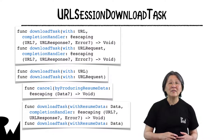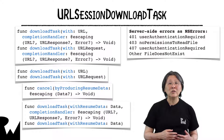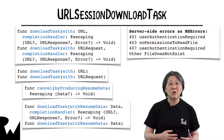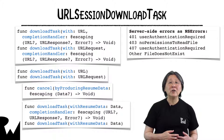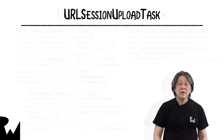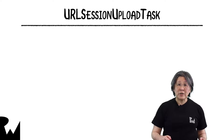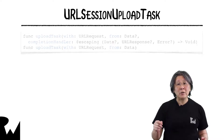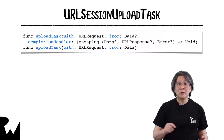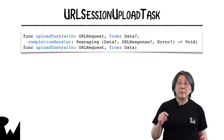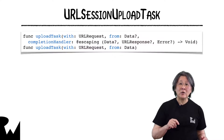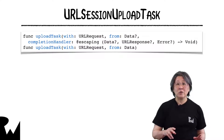Unlike Data Tasks, Download Tasks convert server-side errors into NSError objects and report them via their error parameter. Like Download Tasks with Completion Handler, Upload Tasks with Completion Handler don't use delegate methods for response and data delivery, but delegate methods for handling authentication challenges are still called.